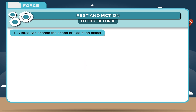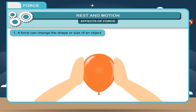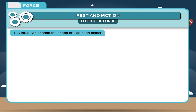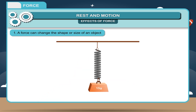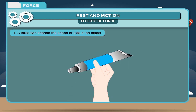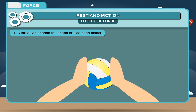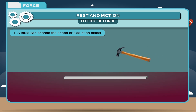For example, when an inflated balloon is pressed between two hands, its shape changes. Similarly, when a spring is pulled beyond its limits, its shape changes. The shape of a gel tube changes when it is pressed or squeezed. Similarly, the shape and size of a ball changes on pressing between two hands. The shape of an iron strip changes on hammering.